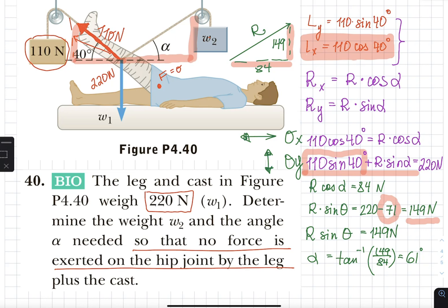Then knowing those components since this angle right here is opposite of 149 we'll do inverse tan of 149 over 84 that gives us 61 degrees and now having that 61 degrees in either one of my legs I can figure out the actual force.